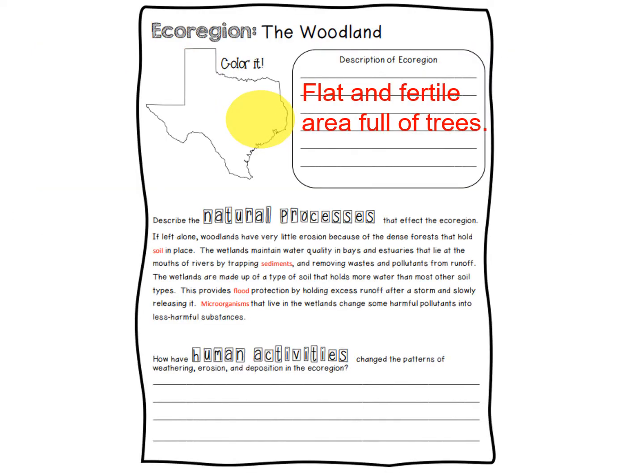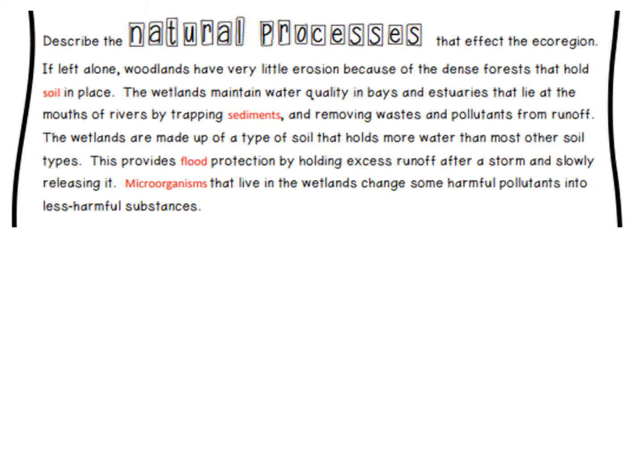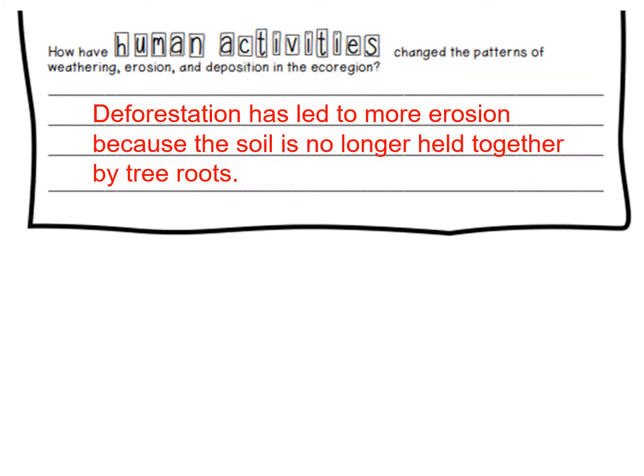The woodland, which is in East Texas, is flat and fertile with lots of trees. The forests are actually going to hold all of the soil in place, so there's not going to be very much runoff during floods. It's pretty protected as long as we leave the trees intact. But deforestation has led to more erosion because the soil is not being held together anymore by those plants.